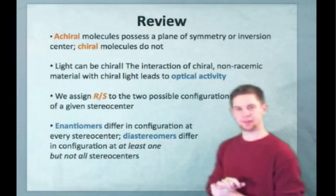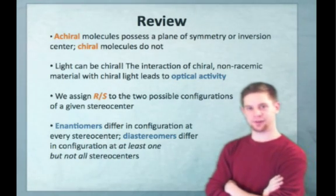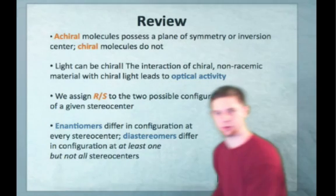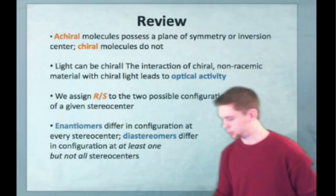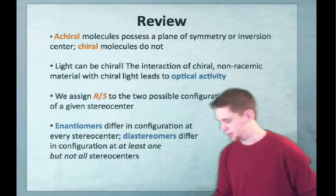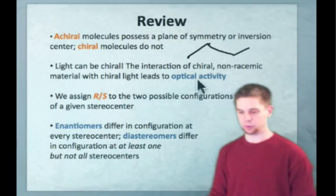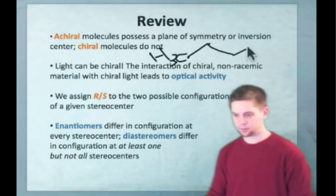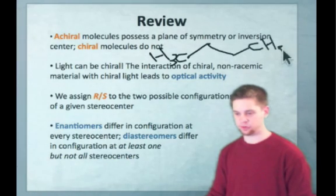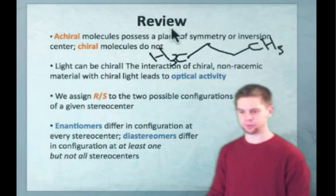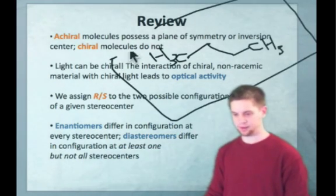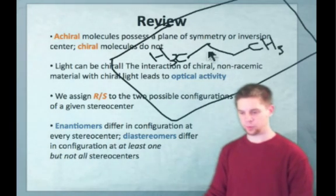Just to review quickly, last time we looked at the difference between achiral and chiral molecules and how to identify achiral molecules by looking for a plane of symmetry. A typical achiral molecule is a lot of what you're used to seeing in basic hydrocarbons. A molecule like butane, with CH3 groups at the ends and CH2 groups in between, possesses a plane of symmetry — simply the plane of the board. We can reflect the groups through the plane and get the same molecule out.